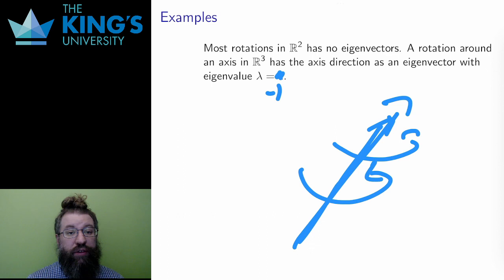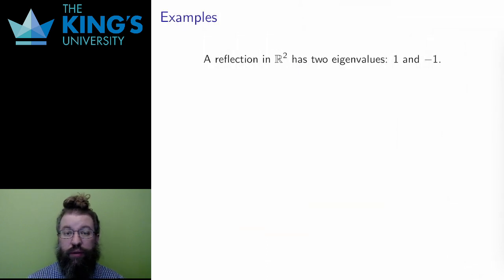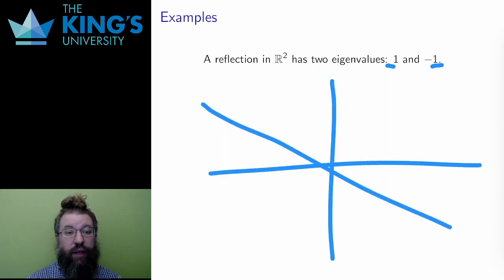A reflection in R^2 has two eigenvalues. There is one direction which is flipped over the line of reflection, the direction that is perpendicular to that line. A vector that is flipped is multiplied by negative 1, so this is an eigenvector with eigenvalue -1.